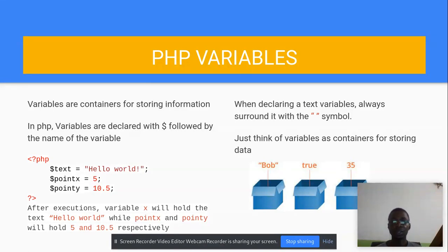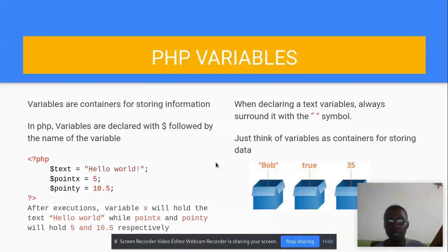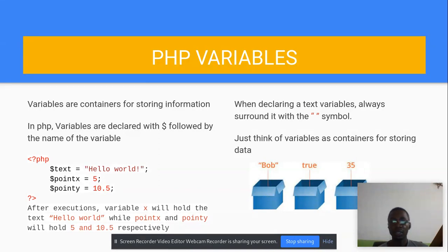Just think of variables as containers for storing data. If you see these boxes, box 1 has 'both', box 2 has 'true', box 3 has 35. That is to say that variables can store any kind of data. That is what PHP variables are all about.